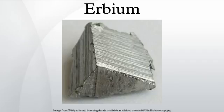Erbium was discovered by Carl Gustaf Mosander in 1843. Mosander separated yttria from the mineral gadolinite into three fractions which he called yttria, erbia, and terbia. He named the new element after the village of Ytterby where large concentrations of yttria and erbium are located. Erbia and terbia were confused at this time. After 1860, terbia was renamed erbia, and after 1877 what had been known as erbia was renamed terbia.